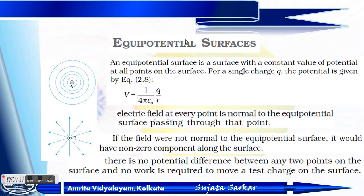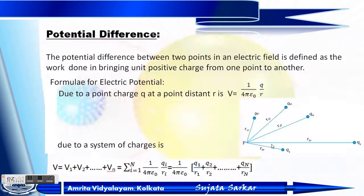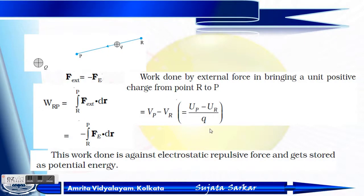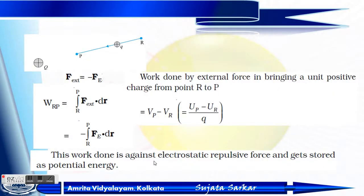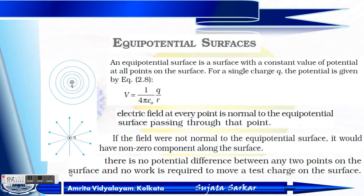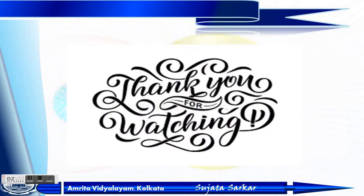There are some characteristics of equipotential surfaces. The electric field at every point is normal — meaning at 90 degrees — to the equipotential surface passing through that point. If the field were not normal to the equipotential surface, it would have a non-zero component along the surface. Also, there is no potential difference between any two points on the surface, and no work is required to move a test charge on the surface. Since the potential difference is zero, the work done is also zero.